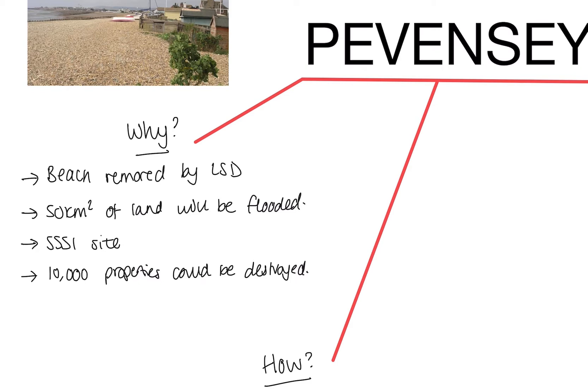If we did nothing to protect the land at Pevensey Bay, it's likely that 50 kilometers squared of land would be flooded. If that land was flooded it would potentially affect the SSSI site that's found there. SSSI sites are important because they're home to special species of plants and animals, so they're protected land. Flooding could threaten the biodiversity there.